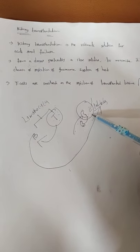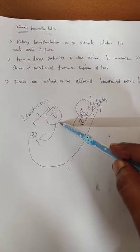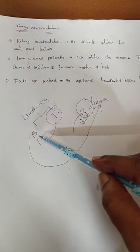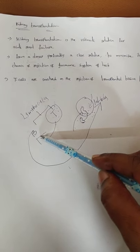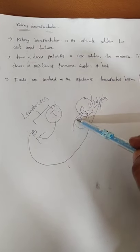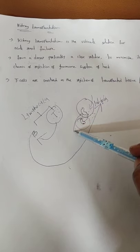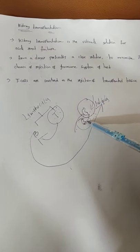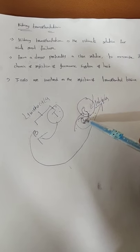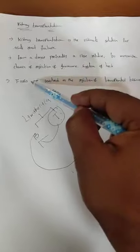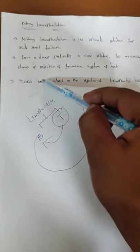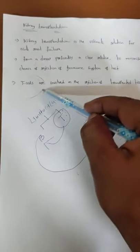Why do they reject transplanted tissue? They think it is a foreign particle. At that time, the T lymphocytes stimulate the B lymphocytes. The B lymphocytes produce antibodies, and the transplant will be rejected. That's why, if you want to transfer any organ, you have to suppress these T cells.